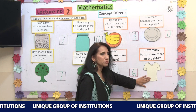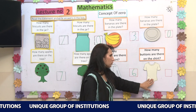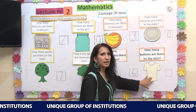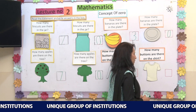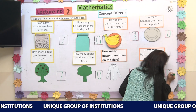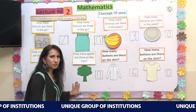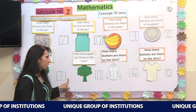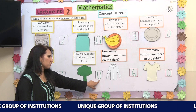This shirt is plain. How many buttons are there on the shirt? There is not a single button on this shirt, so there are 0 buttons. Zero means nothing, so I am going to write 0 in this box. If there is something we count and write; if there is nothing, we write zero.